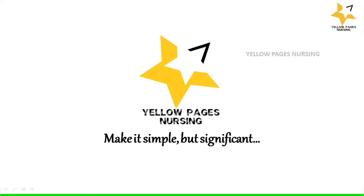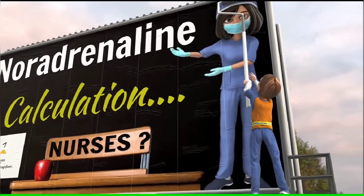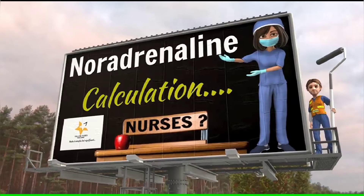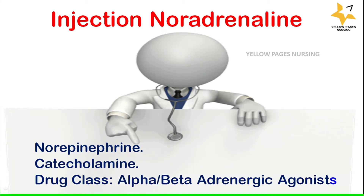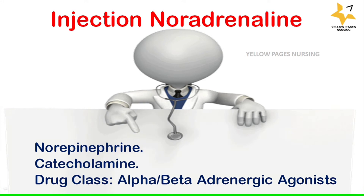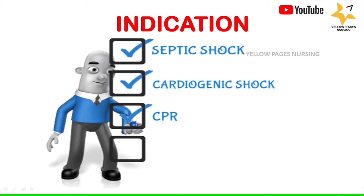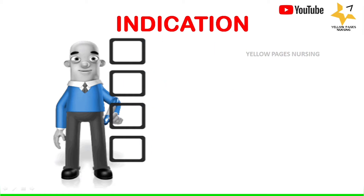Welcome to Yellow Pages Nursing. Today's topic is injection noradrenaline drug calculation for nurses. Noradrenaline, or norepinephrine, is an organic chemical of the catecholamine family and comes under the drug class alpha or beta adrenergic agonist. Common indications include septic shock, cardiogenic shock, cardiopulmonary resuscitation, and hypotension.